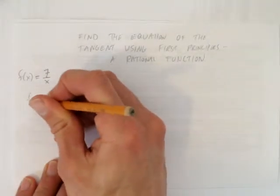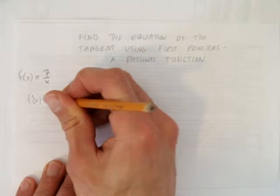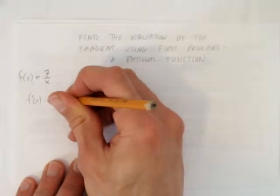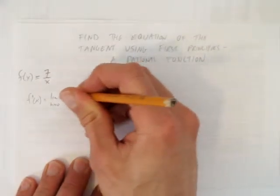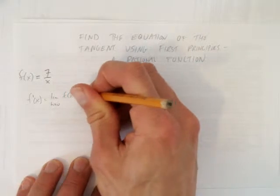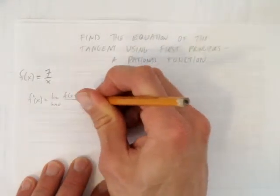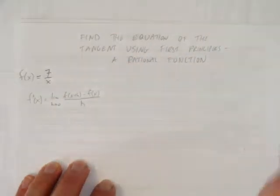So we'll calculate f' at x, or the derivative, using the first principles formula, which is f at x plus h minus f at x all over h. That's a formula you'll need to know.